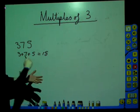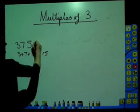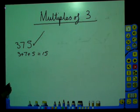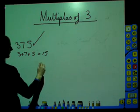3, 6, 9, 12, 15. So 375 is a multiple of 3. You add the digits. Take another large number.